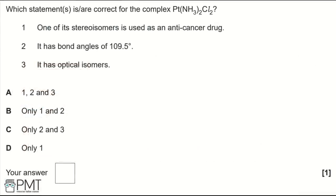Which statements are correct for the complex Pt(NH₃)₂Cl₂? 1: One stereoisomer is used as an anti-cancer drug. 2: It has bond angles of 109.5°. 3: It has optical isomers. Options: A: 1, 2 and 3. B: Only 1 and 2. C: Only 2 and 3. D: Only 1.